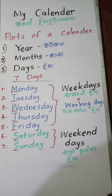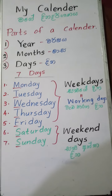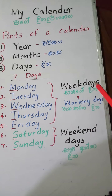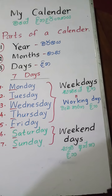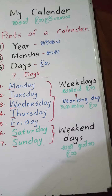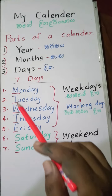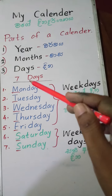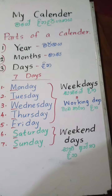Then we can divide these days into two parts: weekdays and weekend days. A weekday is a working day. 6 days we are doing work in the period, and 7th day we can call the weekend day. First letter should be capital.